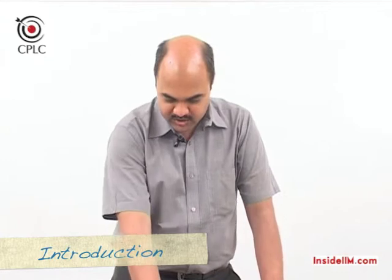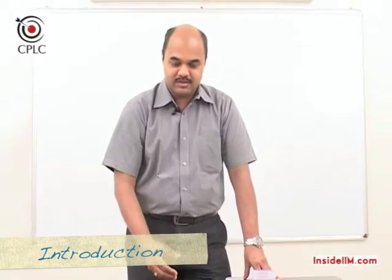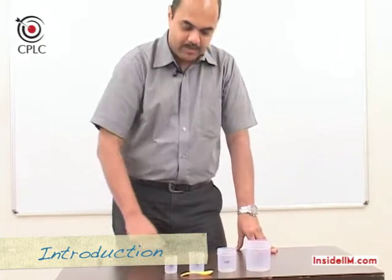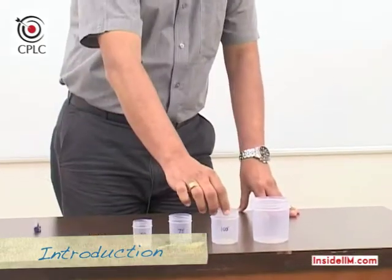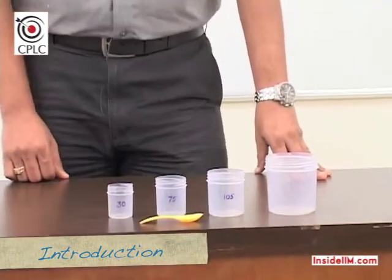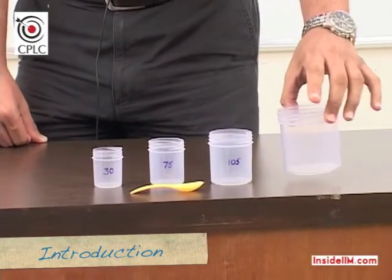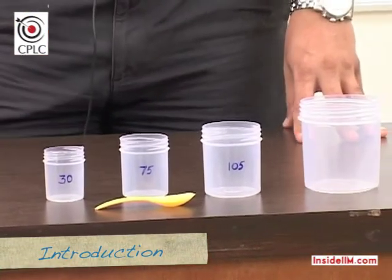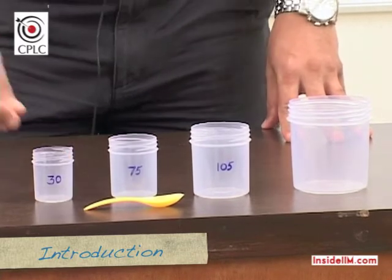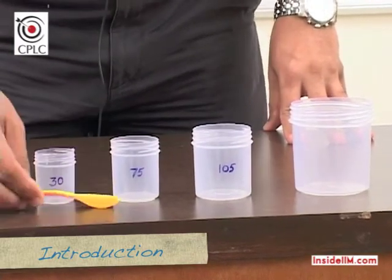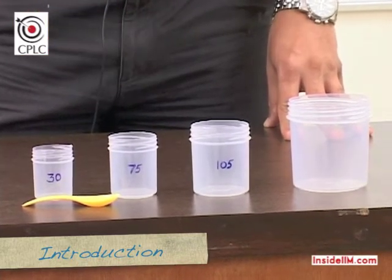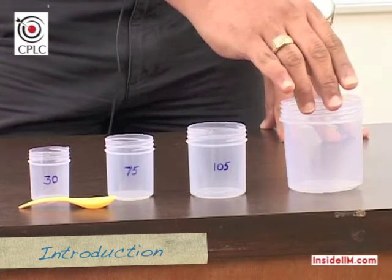Suppose we have these three containers. If you notice, this container has a capacity of 30 ml, this container has a capacity of 75 ml, and this is a third container having a capacity of 105 ml. There is also a larger container. Suppose these three containers contain some liquid and I have this spoon which I am going to use to remove the liquid from these containers and empty that into this larger container.